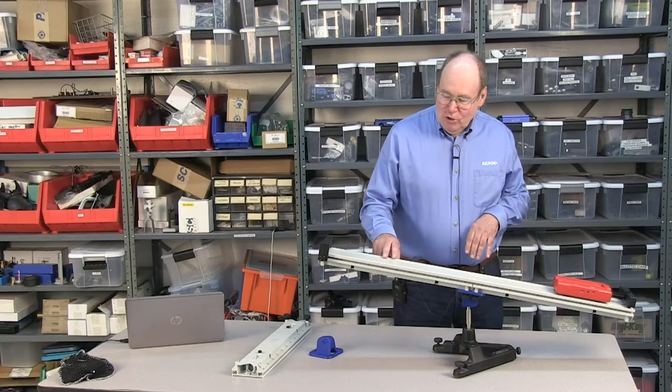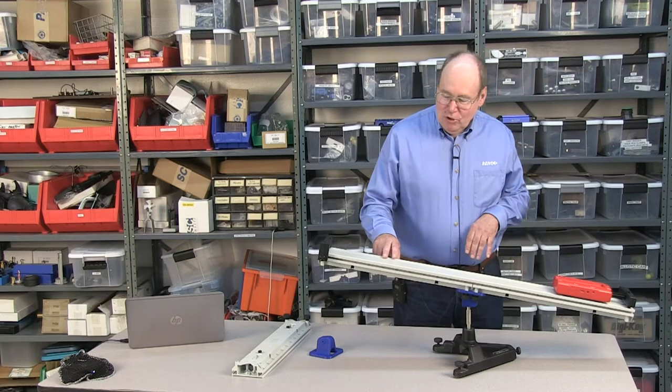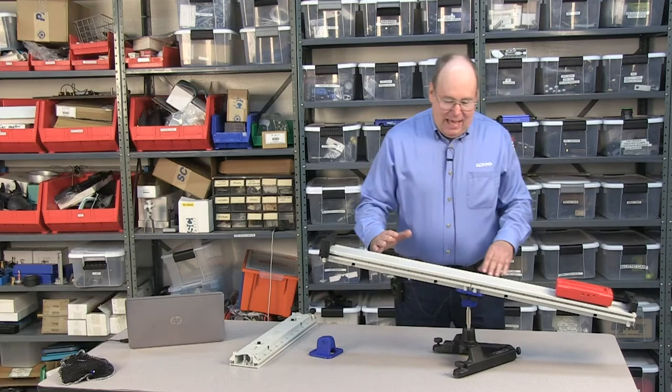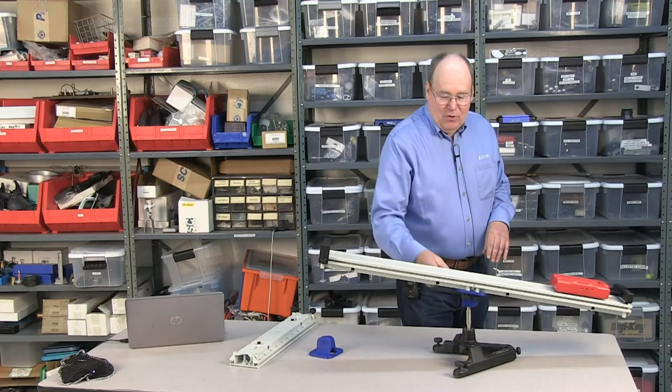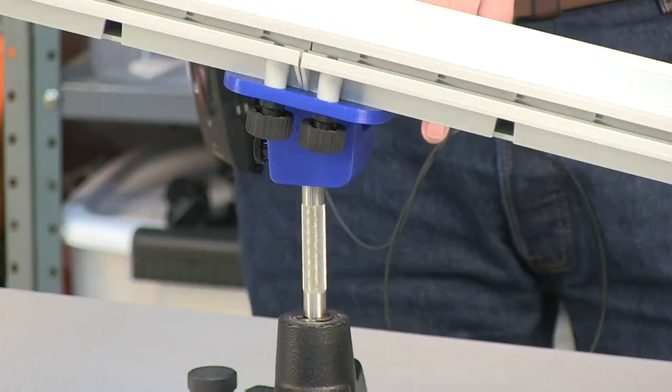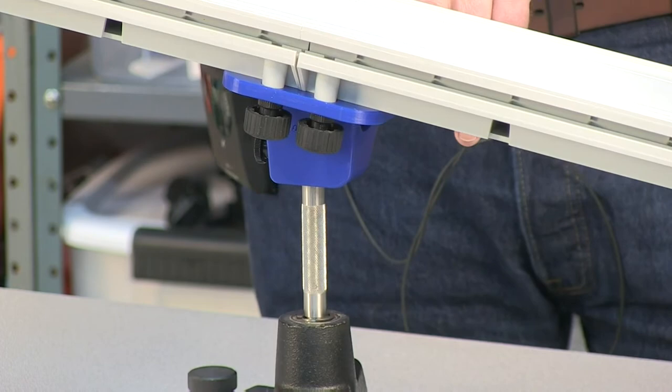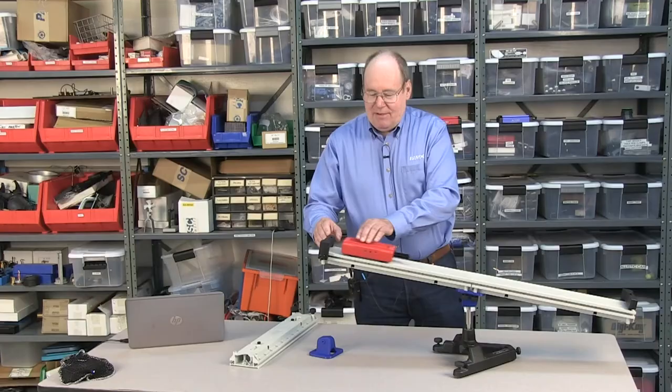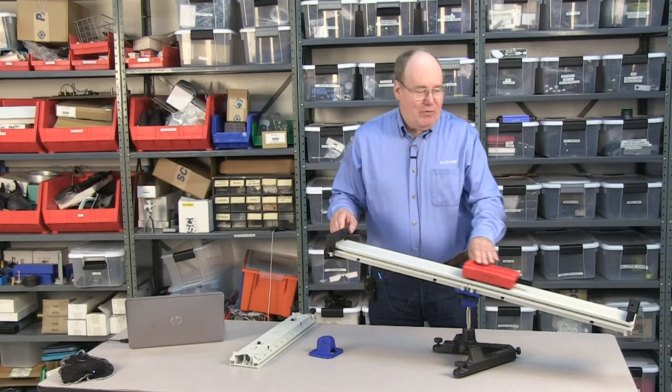We're using the same plastic track that Jonathan showed you earlier, just a couple sections of it, and a printed part that puts the track at an angle on our rotating platform. So again, we have that on Thingiverse. So we've had a couple different versions of this adapter. This one is at a little higher angle because I found out that the faster the cart was moving, the bigger the effect.